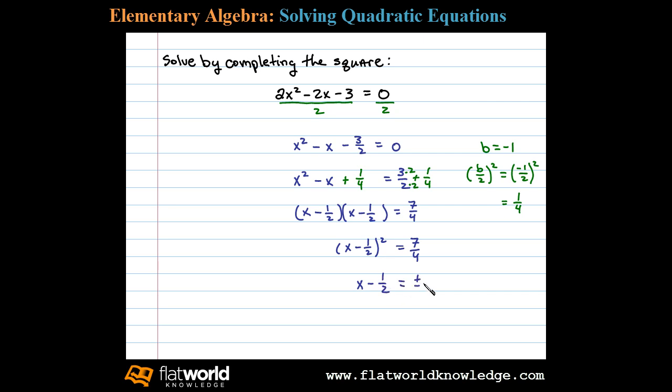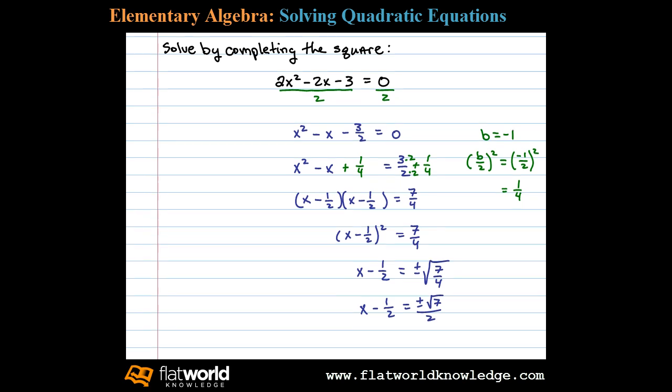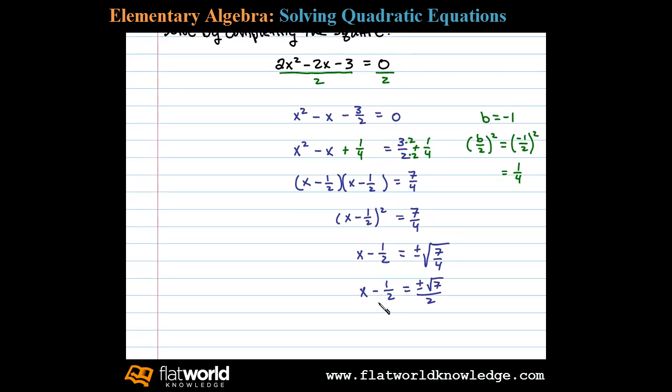Simplifying, we're left with x minus 1 half equals plus or minus the square root of 7 over 2. Adding 1 half to both sides, then we have x equals 1 half plus or minus the square root of 7 halves.